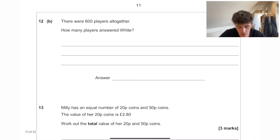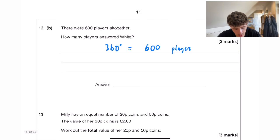There were 600 players altogether. How many players answered white? So we know that 360 degrees represent 600 players. So white was 75 degrees. So if we do 360 divided by 75, that means we've divided by 4.8 to get down to there. So we need to do 600 divided by 4.8, which gets us 125 players.